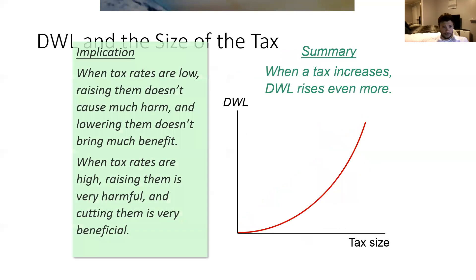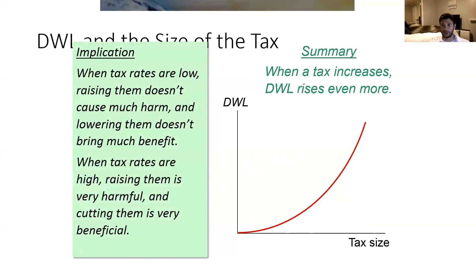The lesson to take from this is that when tax rates are already low, increasing them doesn't cause that much harm. So if you have to raise taxes, it might make sense to do that in markets where the taxes are already relatively low — it wouldn't cause too much more harm in terms of deadweight loss. However, when tax rates are high, raising them causes much more damage. So we may want to avoid taxing markets where the tax rates are already high, and instead focus on markets where the tax rates are already low, if we want to raise revenue without causing too much damage.